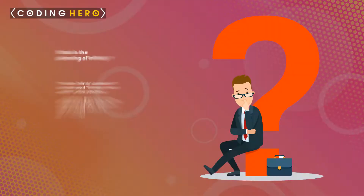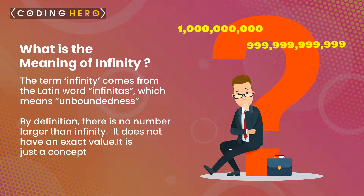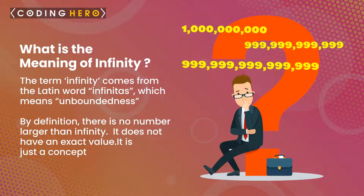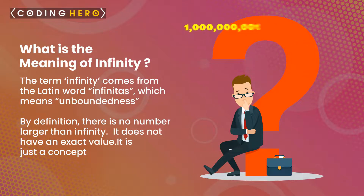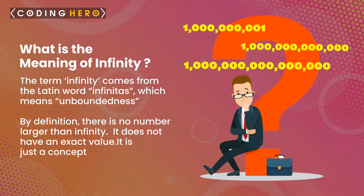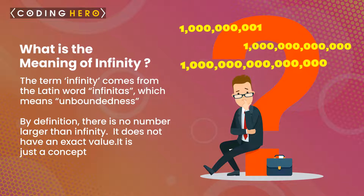What is the meaning of infinity? If someone asks you to think of the largest possible number, what would it be — a billion, a million, or 90 million? You can still get a larger number for every possible 'largest number,' like a billion and one, or a trillion, or even a trillion and one, by simply adding one.